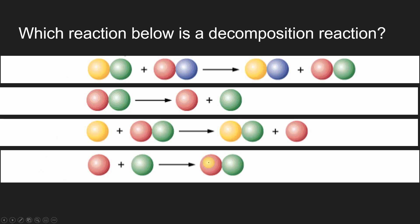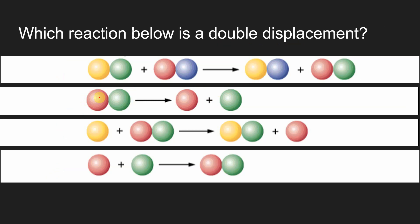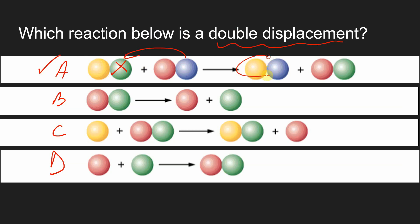Decomposition is one thing falling apart into two separate things, so B is decomposition. Now, one of these is single displacement — what we're learning today. But if we've already identified several, which one best represents double displacement? If you said A, you're correct. The yellow one gets rid of the green one and picks up the blue one — they're doubly swapping. Which means C is the form of our single displacement reaction.